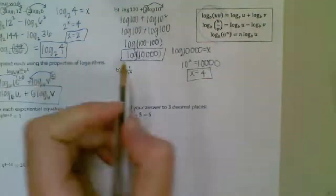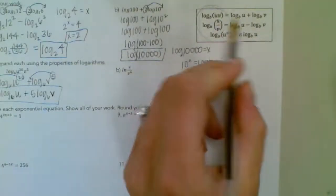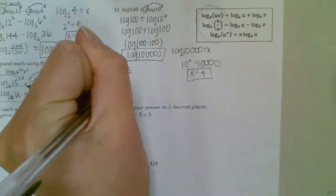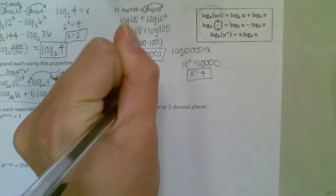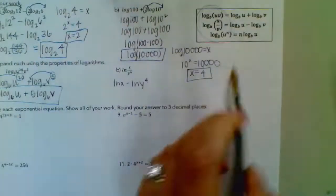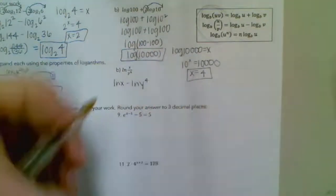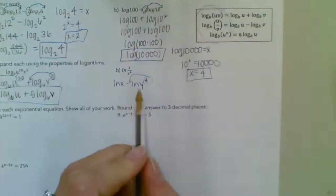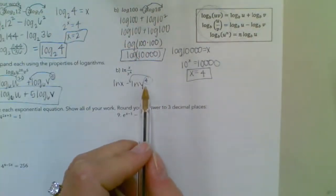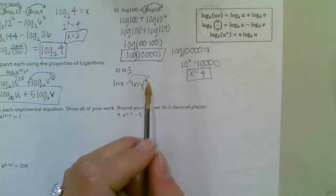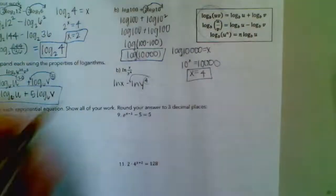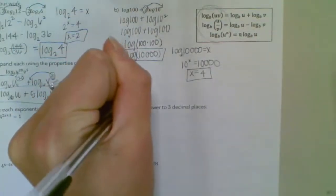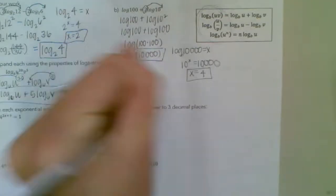Letter B: this is division, so you separate division using subtraction. So the natural log of x minus the natural log of y to the 4th. When you have a power, you move it out in front of the log — that 4 goes in front of the log term with y because it's on the y, not in front of the x term. So natural log of x minus 4 natural log of y.